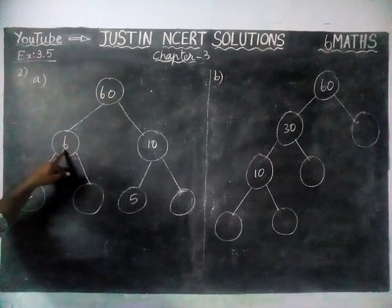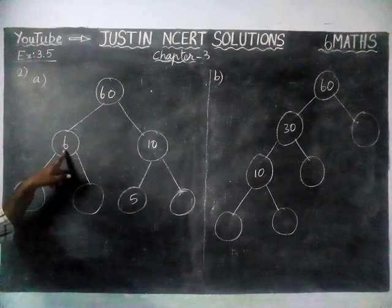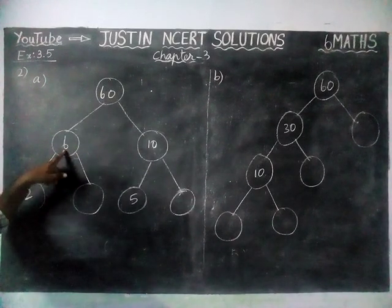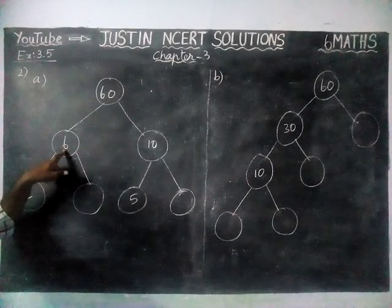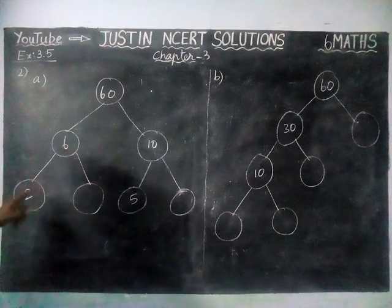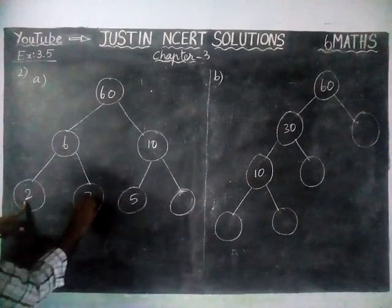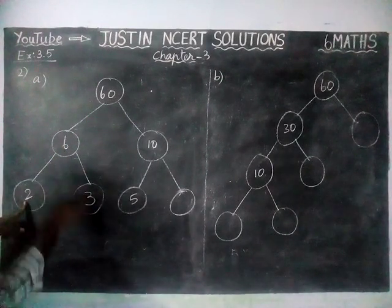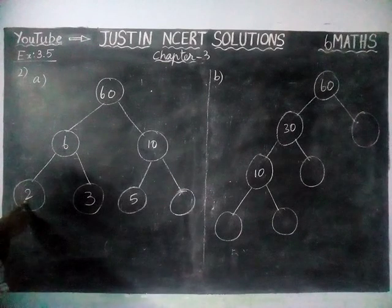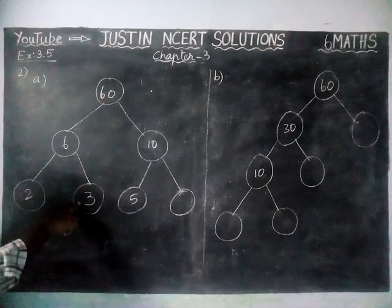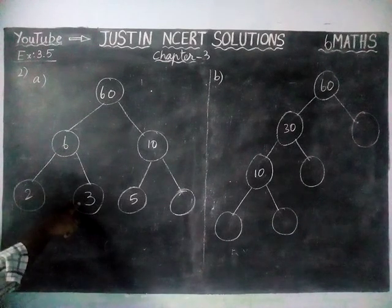6 is not a prime number, so again we are going to separate the 6. One number is 2, so 2 threes are 6. 2 is a prime number and 3 is also a prime number.